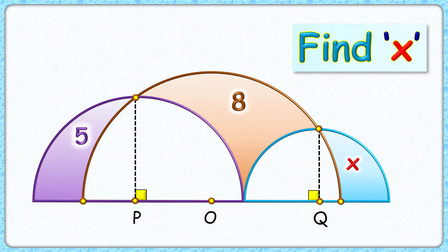This interesting question gives us three semicircles with centers P, O, and Q, such that the line joining the point of intersection to the center of the semicircle is perpendicular to the diameter. The exciting part is, with the given purple and brown areas, we have to find this blue area or value of x.